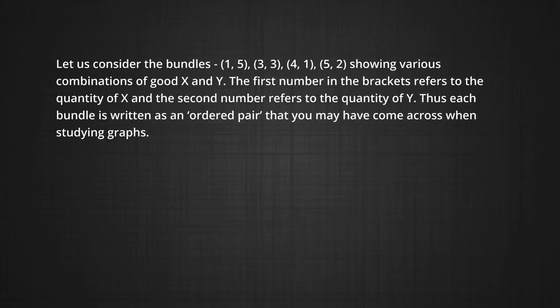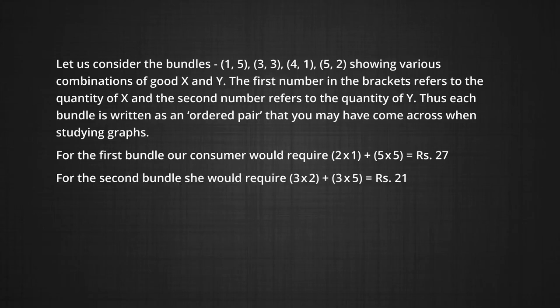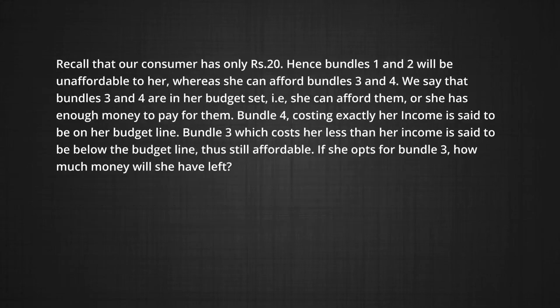For the first bundle, our consumer would require 2×1 + 5×5 = 27 rupees. For the second bundle, she would require 21 rupees. For the third bundle, she would require 13 rupees, and for the fourth, 20 rupees. Recall that our consumer has only 20 rupees. Hence, bundles 1 and 2 will not be affordable to her, whereas she can afford bundles 3 and 4. We say that bundles 3 and 4 are in her budget set — she has enough money to pay for them.